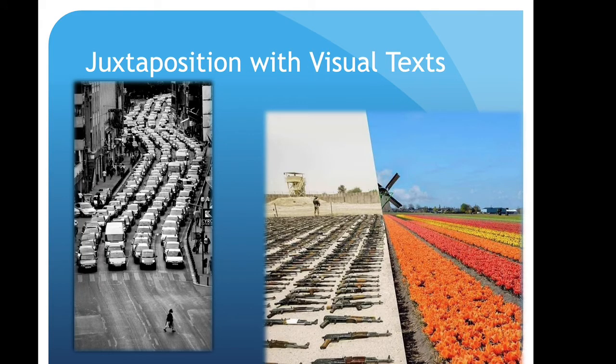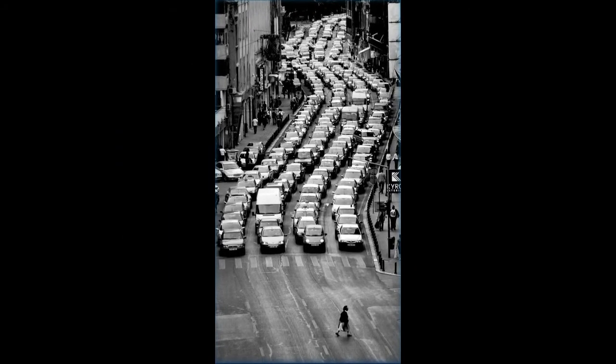Here are two example photos. On the left, we have a long line of cars and then a person crossing the street. On the right, we have rows of guns and flowers. Looking at the one on the left, the two elements for juxtaposition are kind of top and bottom. The top of the picture is full of cars, full of energy, just being held back by a simple stoplight — once that light turns green, tires are going to be screeching and engines revving. It's busy, full of energy, almost panicky, like rush-hour traffic.